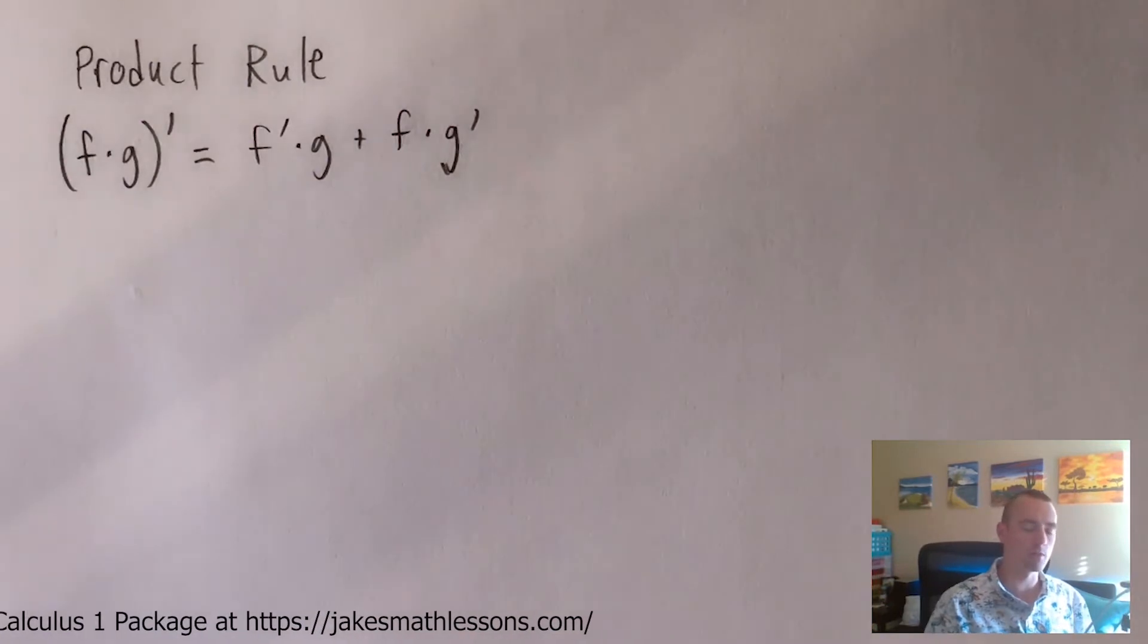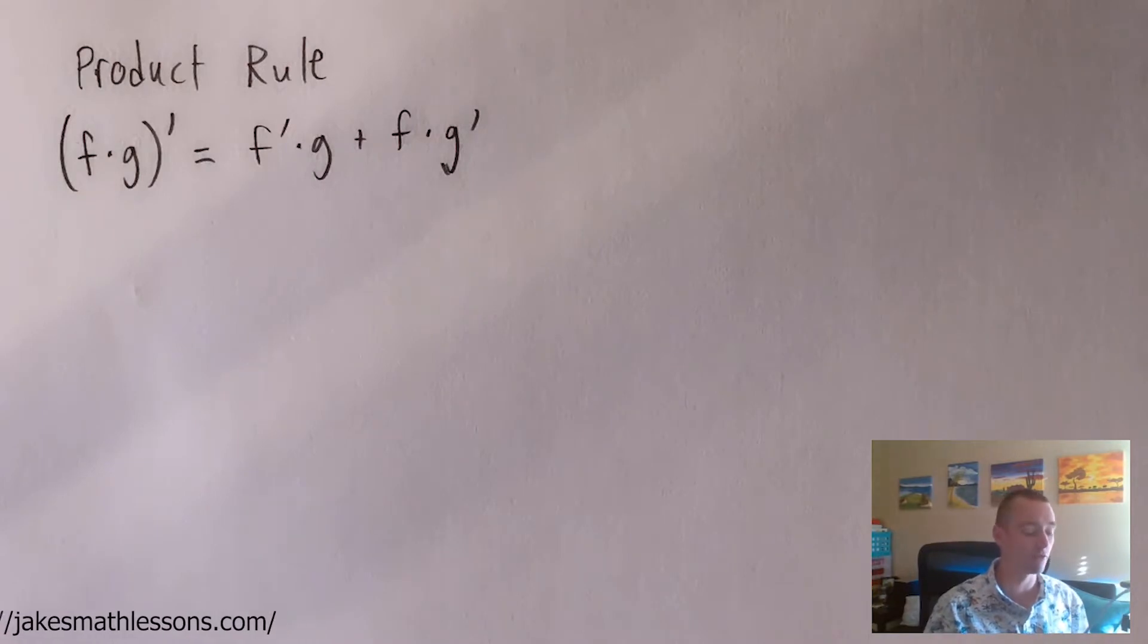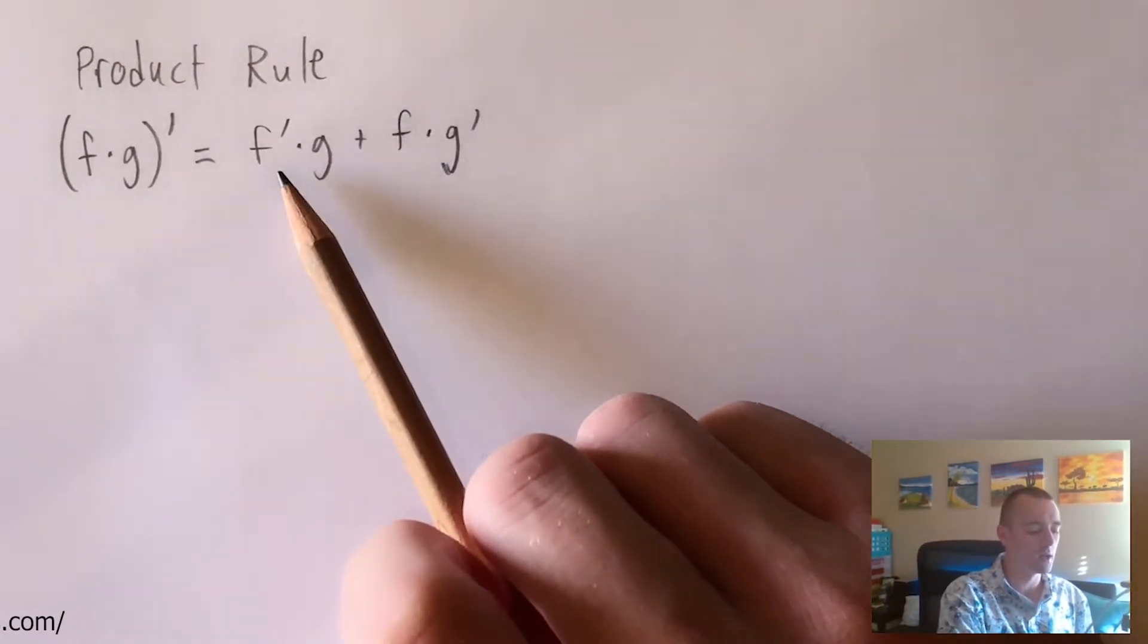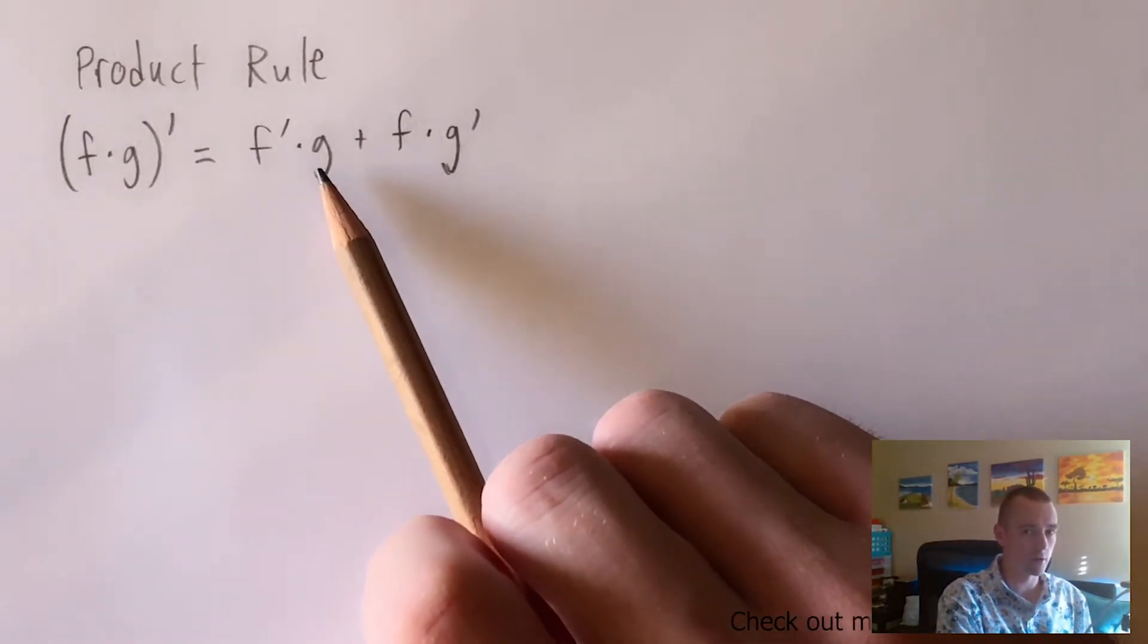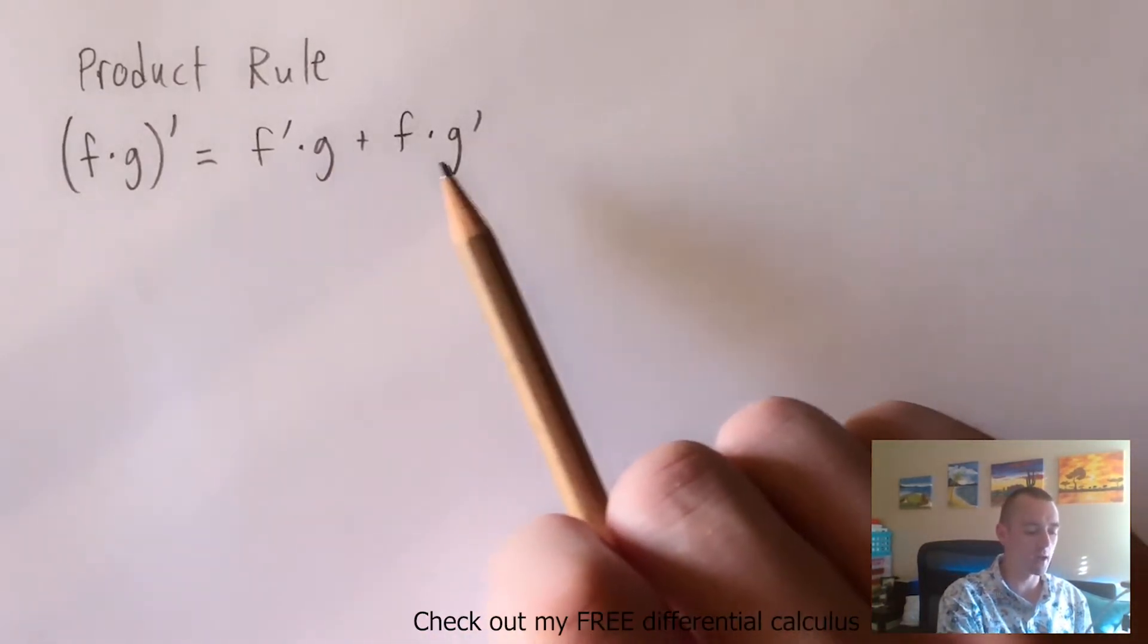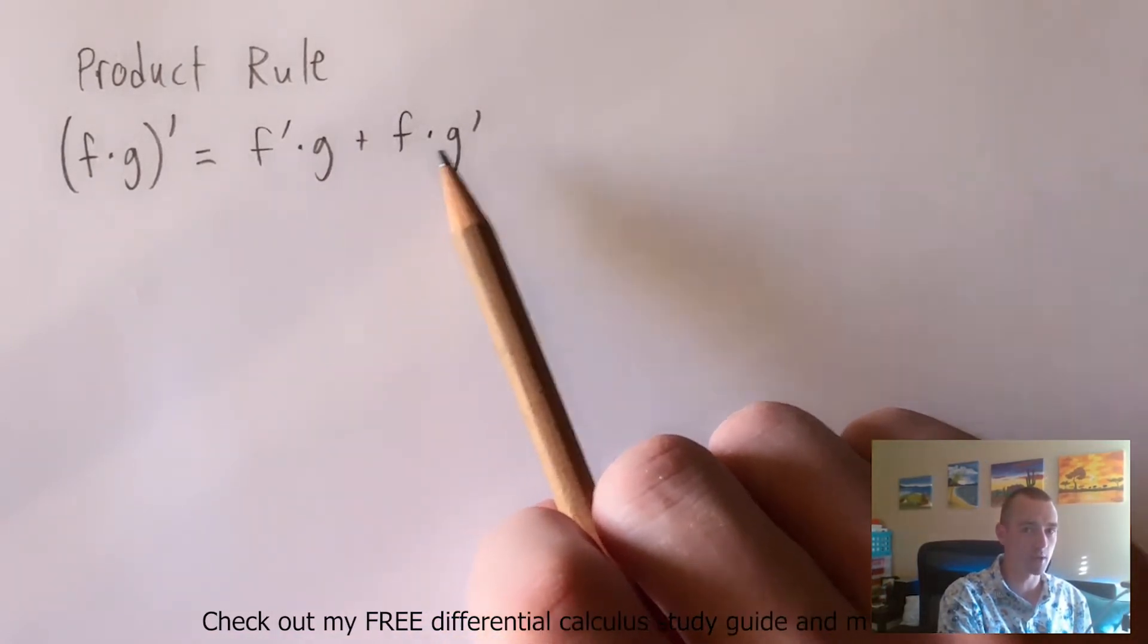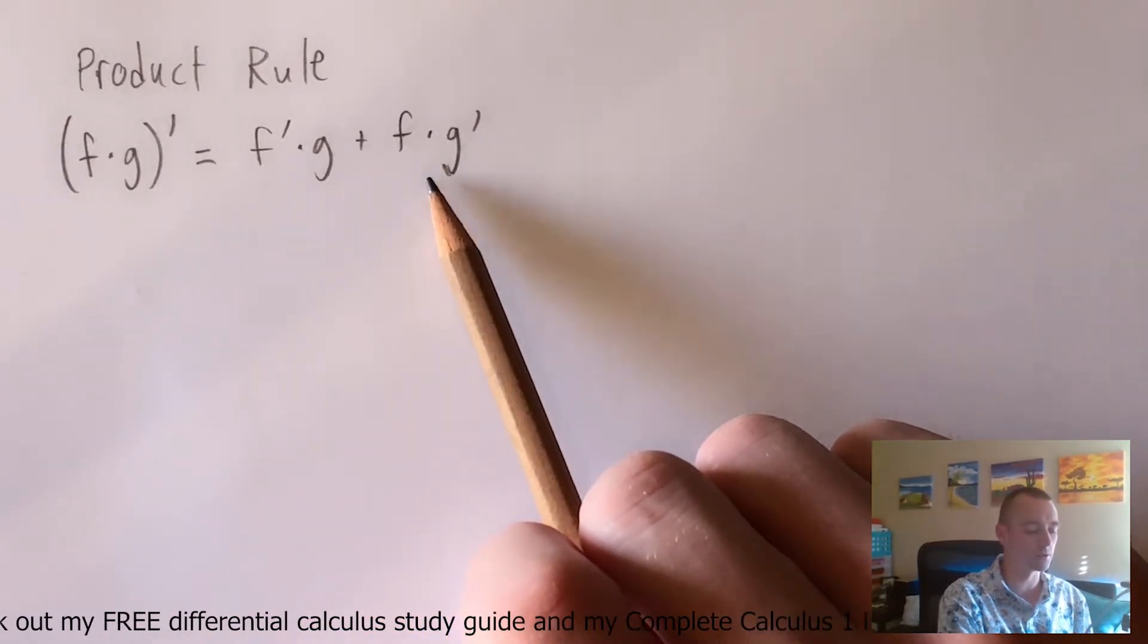And basically what you want to keep in mind is you maybe have seen the product rule formula in slightly different forms or slightly different variations of this formula. Because what you want to keep in mind is multiplying two things, it doesn't care what order that's happening in. So what I mean by that is f prime times g is the same as g times f prime. And similarly over here, f times g prime is the same as g prime times f. So if you switch the order of those two, it doesn't make a difference in what it actually is equal to.